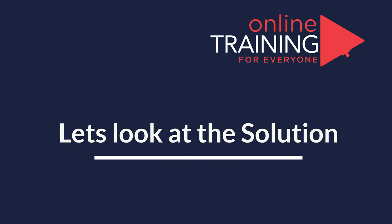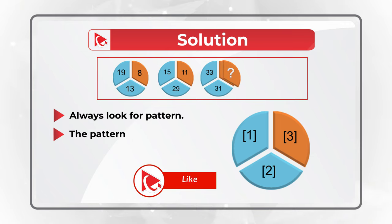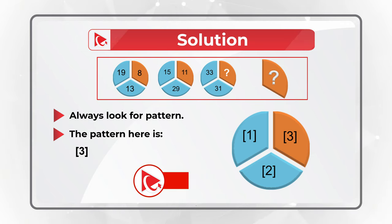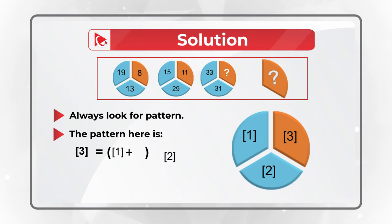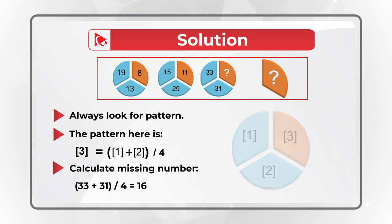You need to always look for patterns to solve these types of problems. The pattern here is that section 3 of the circle is calculated as sections 1 plus 2, divided by 4. So to calculate the missing number, you add 33 plus 31 and then divide the sum by 4, and you will get the result: 16.